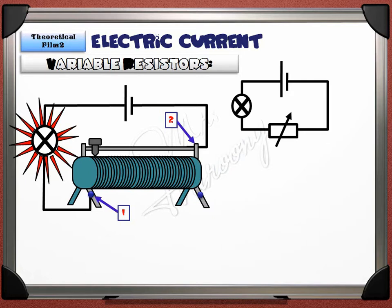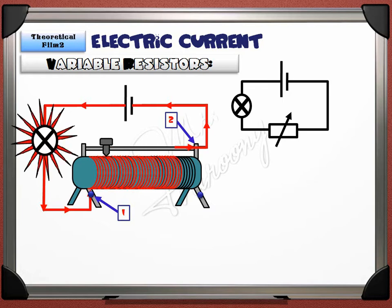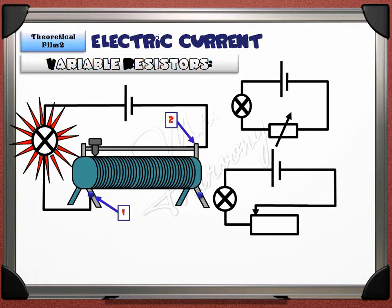With the slider in one position, current flows from the positive terminal through the coil turns before reaching the slider and back to the negative. Moving the slider further decreases the brightness of the bulb because the current flows through more turns of wire to reach the slider, meaning a longer wire and higher resistance, so the current is smaller. There is another circuit symbol of the variable resistor that can show the approximate position of the slider in the circuit.